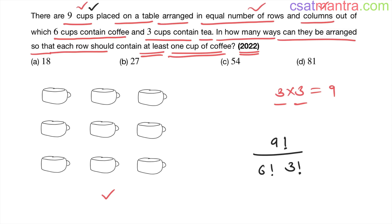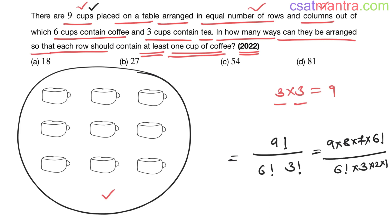So this is the total number of ways you can arrange these nine cups in nine places: nine into eight into seven into six factorial by six factorial into three into two into one, three factorial. I am expanding it.